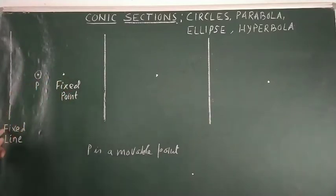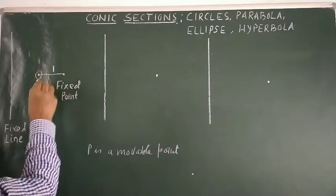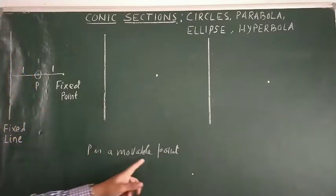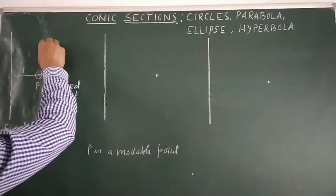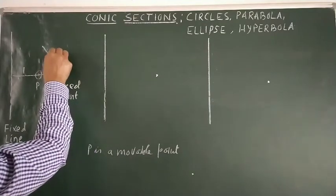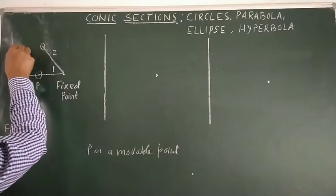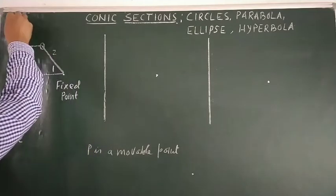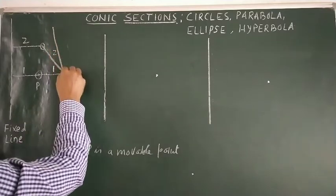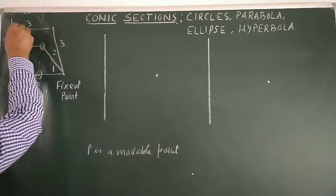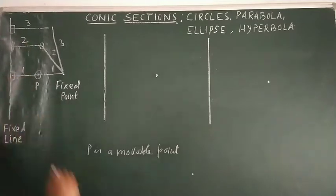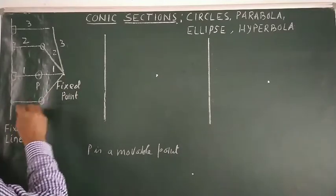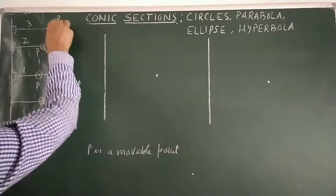Let us see: this movable point P is moving in such a way that its distance from the fixed point and from the fixed line are the same. Suppose this distance is one, this is also one — equal distance is maintained by point P. If P comes here and this length is two, then this length must also be two. Likewise, if this distance is three, this is also three.